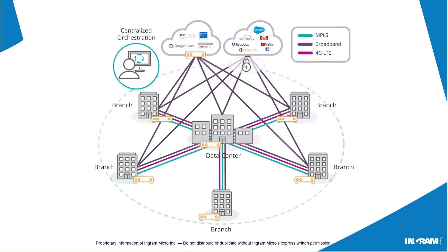SD-WAN gives us all that through central orchestration — we can tell it which connections we want as primary and secondary, what we want as failover connections, how we want different locations to connect, and what policies we're going to utilize, whether we're connecting security camera systems, network access control, or connecting all of our sites directly to the cloud. With this model, we're able to secure everything while giving it a lot more intelligence, lessen latency, and connect our users to resources without backhauling everything through a central data center. This is truly the evolution of WAN connectivity, and the EdgeConnect product portfolio will take you through how it optimizes and takes SD-WAN solutions to the next level.